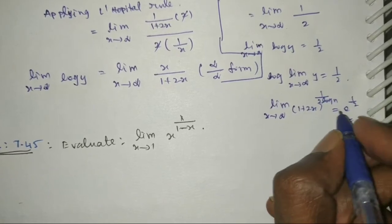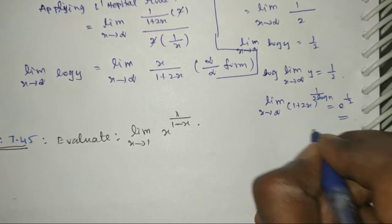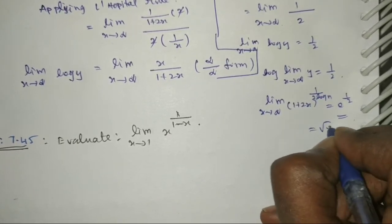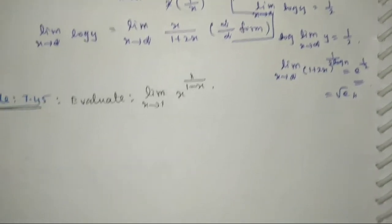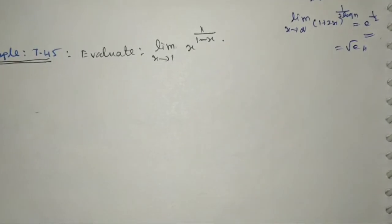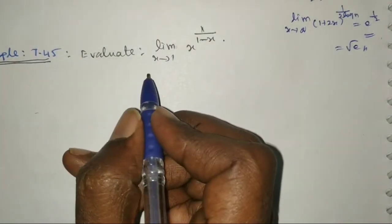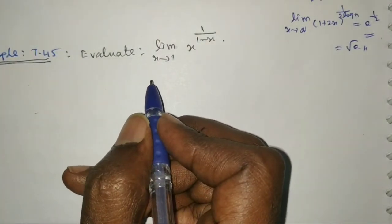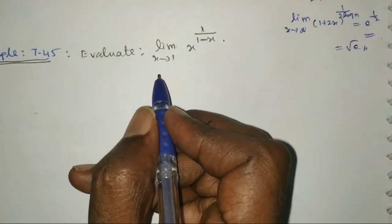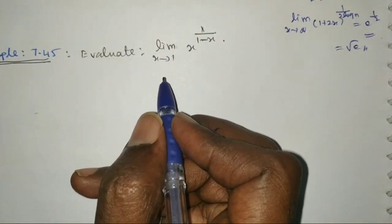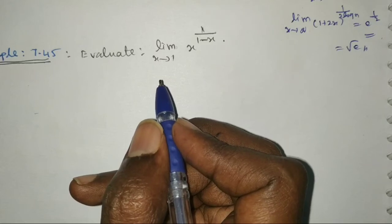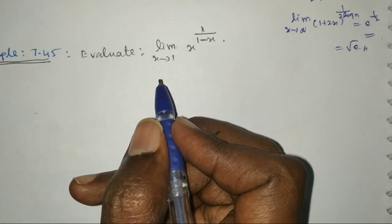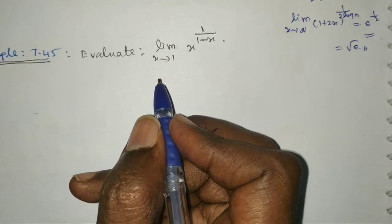So e^(1/2) can also be written as the square root of e. That is the answer. The next question is: evaluate the limit as x tends to 1 of x^(1/(1 - x)).